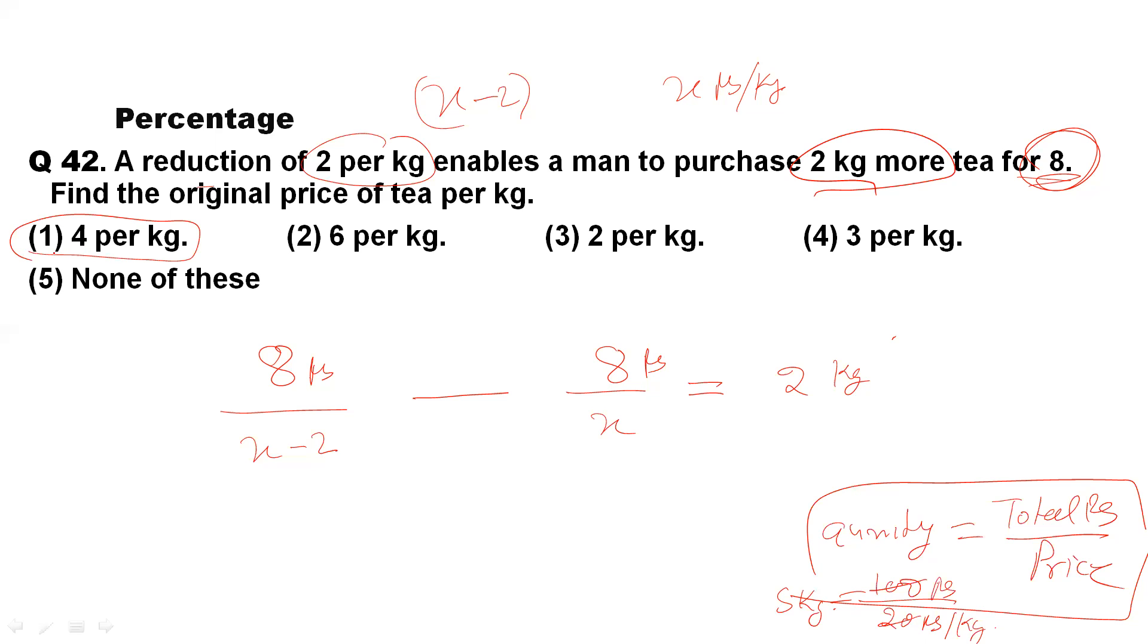Let me take option 1, which is 4. If I put 4 there, this becomes 4 minus 2, which equals 2. If I take 4 as an example, 4 minus 2 becomes 2.